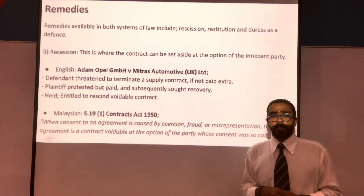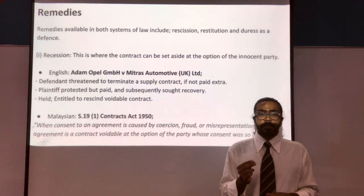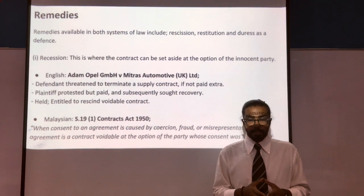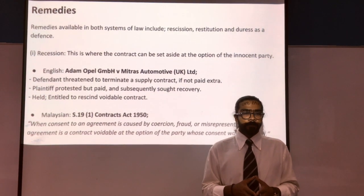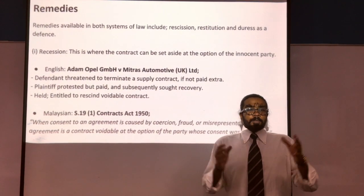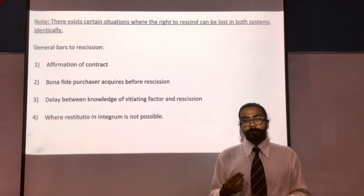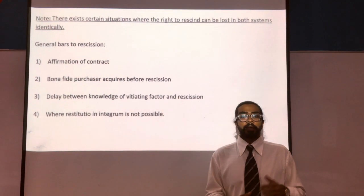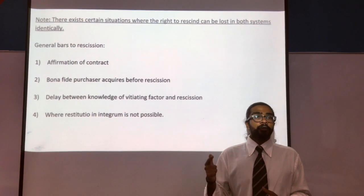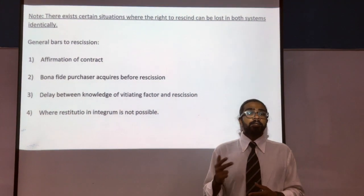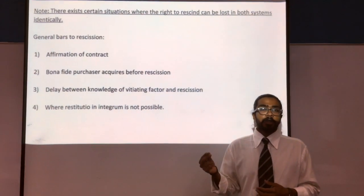The same remedy of rescission is available in Malaysian law under Section 19(1), where consent caused by coercion, fraud, or misrepresentation renders the agreement voidable at the option of the party whose consent was so caused. It is important to note that although the remedy is available in both systems, there exist certain situations where the right to rescind might be lost. These bars to rescission are: (1) affirmation of the contract by the innocent party; (2) a bona fide purchaser acquiring an interest before the rescission; (3) delay between knowledge of the vitiating factor and action to rescind; and (4) where restitution is not possible.